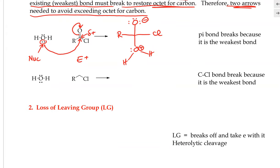Here is another example where we come in and attack a carbon that is also partially positive but not a carbonyl. Due to the difference in electronegativity between the carbon and the chlorine, this carbon bears a partial positive charge. The oxygen can serve as a nucleophile to attack this electrophilic carbon. As this is happening, this causes the carbon to exceed its octet — and note there are two hydrogens not drawn out, but the carbon already has an octet of electrons.